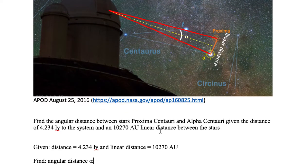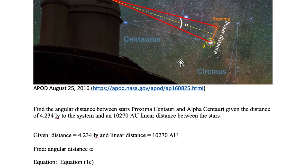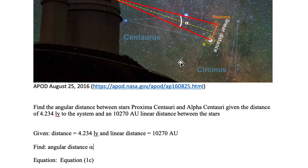Now we need to solve the find. The find is the angular distance, this alpha angle subtended in the sky. We want to find that angular distance between the two stars.